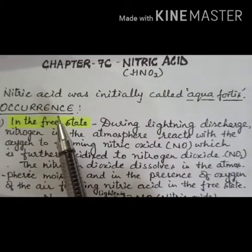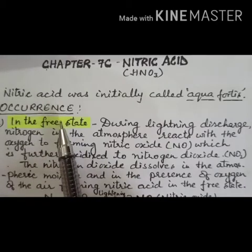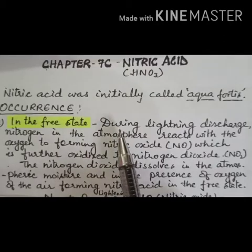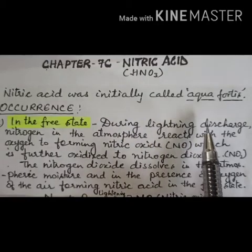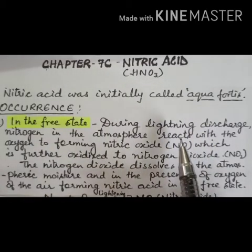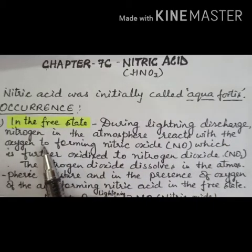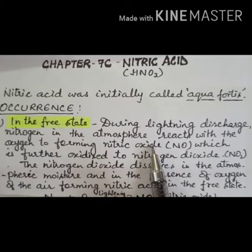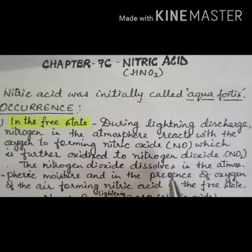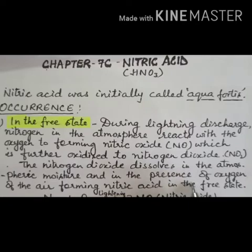Occurrence of nitric acid: nitric acid occurs in free state as well as in combined state. In the free state, during lightning discharge, nitrogen in the atmosphere reacts with oxygen of the atmosphere forming nitric oxide, which further oxidizes to form nitrogen dioxide. The nitrogen dioxide then dissolves in atmospheric moisture in the presence of oxygen forming nitric acid in the free state.